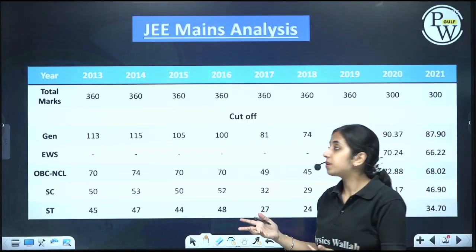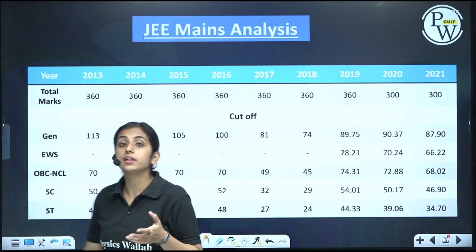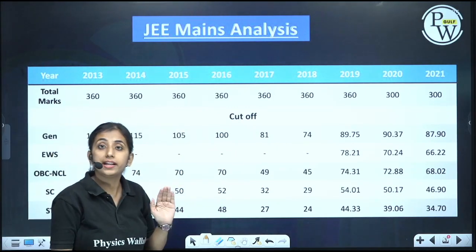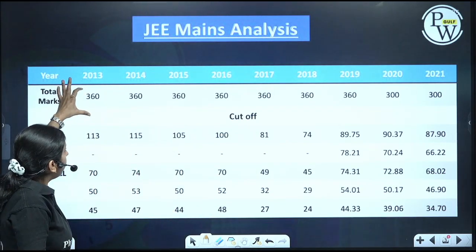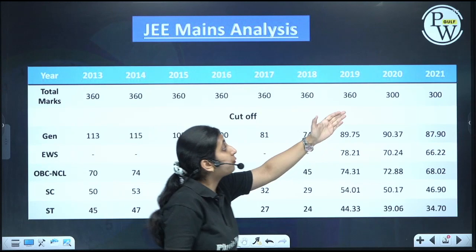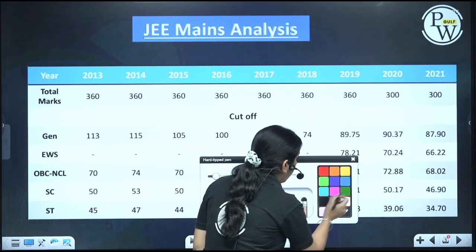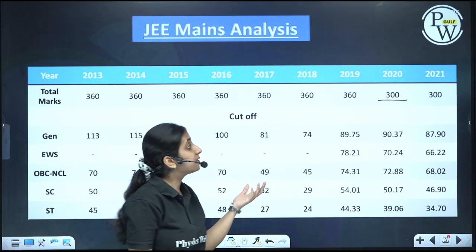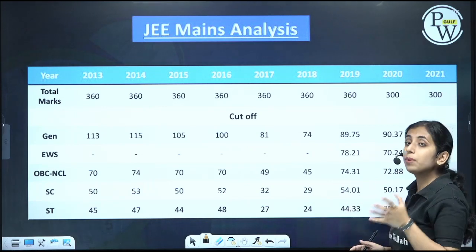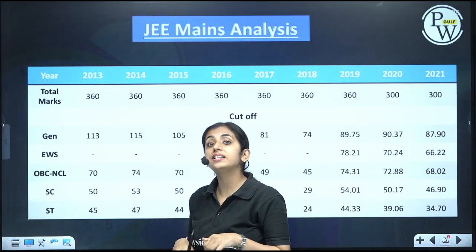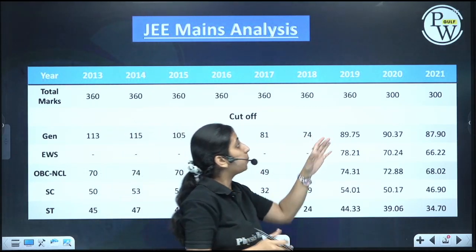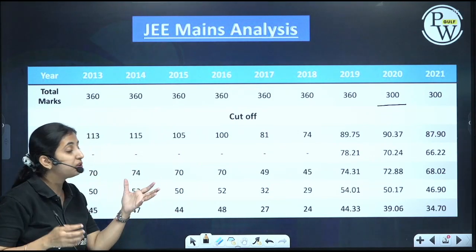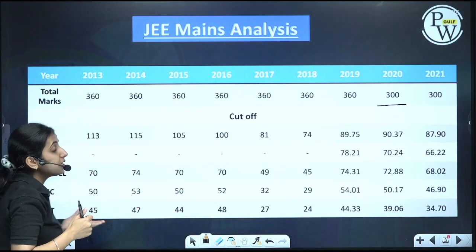Let us see what were the cutoffs of the previous year papers. This is a 10-year cutoff analysis from 2013 to 2023. Earlier the paper used to be of 360 marks, but from 2020 the marks have been reduced to 300. Earlier the paper used to have 90 questions and now it has only 75 questions. So from 2020, the total marks changed from 360 to 300, and these are the cutoff analyses for the different categories.